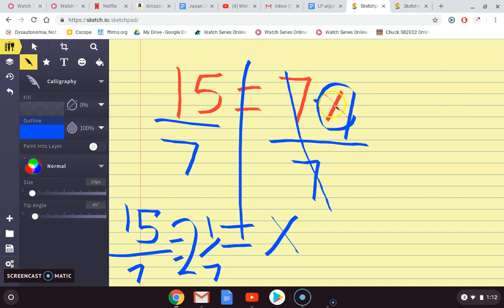Here we had 7 times x. We divided both sides by 7. It can be a fraction, a mixed number, or you can divide and get a decimal.